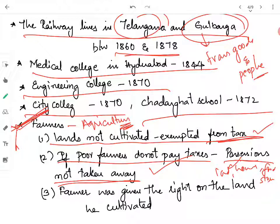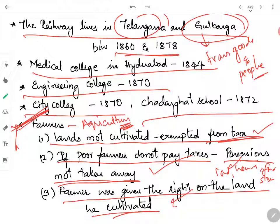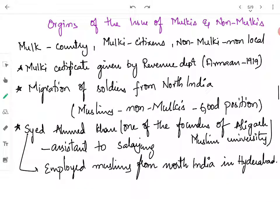The most important reform he made was that the farmer was given the right over the land he cultivated. For example, if you cultivate two acres of land in your village, Salar Jung I gave you the rights over that land — you could keep the land, live on it, and cultivate any crops you chose.